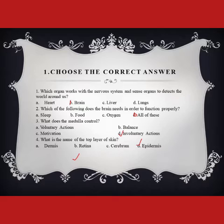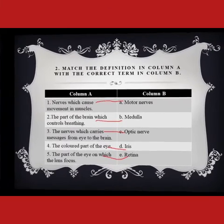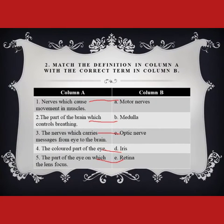Question number five: Brain cells are different from other cells of the body because they do not — the option is 'need oxygen,' but the correct answer is that brain cells do not regrow. So 'regrow' is the correct answer.